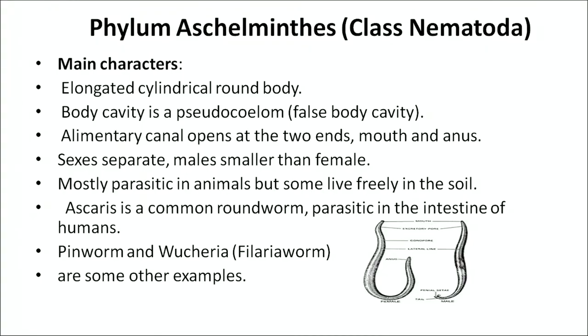The next phylum is phylum Aschelminthes, belonging to class Nematoda. It has a false coelom — pseudocoelom. Notochord is absent, so it is non-chordate. Examples are roundworms and threadworms. They have an elongated, cylindrical, round body. The body cavity is in the form of a pseudocoelom. The alimentary canal opens at both ends — they have both mouth and anus. Sexes are separate; males are smaller than females. They are mostly parasitic but some live freely in the soil.